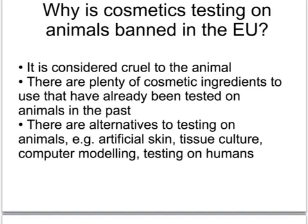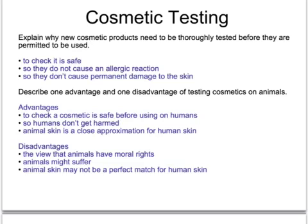The fact that cosmetics are no longer tested on animals in the EU does not mean that cosmetics no longer need to be tested. New products have to be tested thoroughly to make sure they're safe and not going to cause any skin rashes, allergic reactions, or permanent damage to the skin. There were of course advantages to testing cosmetics on animals — for example, it's important to test that a cosmetic is safe before it's tested on humans, and animals were used because their skin was a close approximation to human skin. However, there were also disadvantages: people believe that animals have some form of moral rights and therefore it's cruel to test on an animal that hasn't given its permission. Also, the animal skin may not actually be a perfect match for human skin, such that the cosmetic causes no problem for the animal but may cause a problem on human skin.